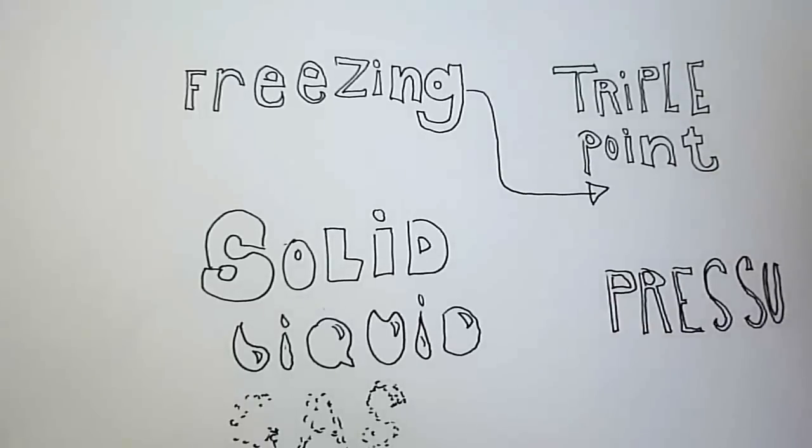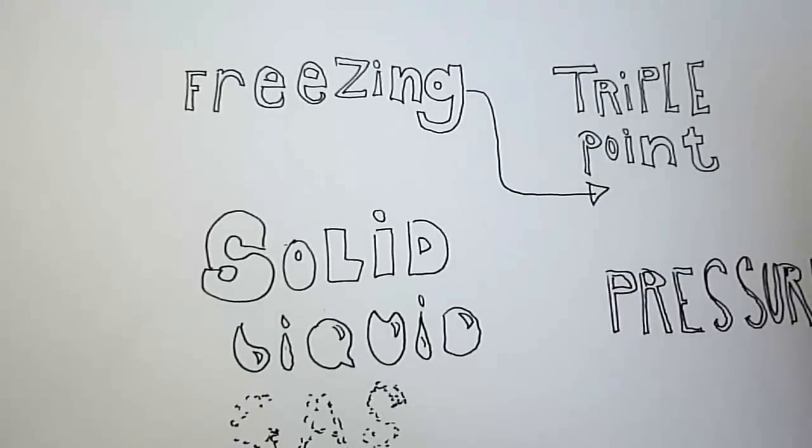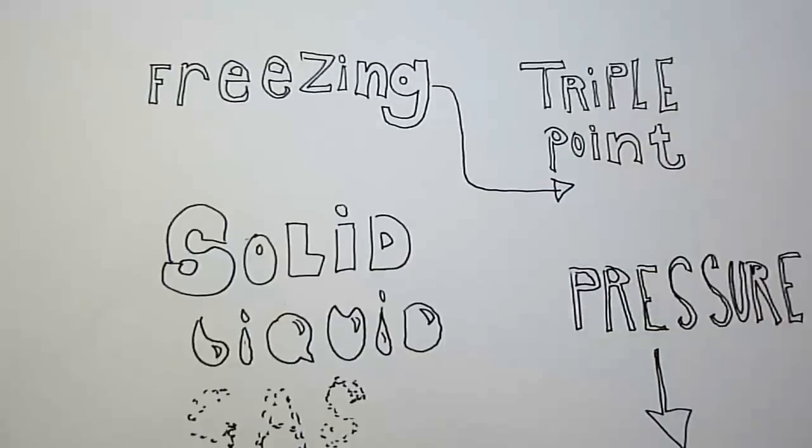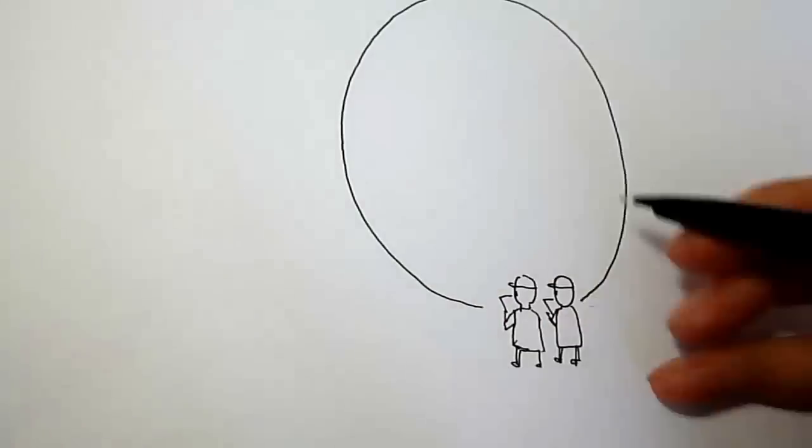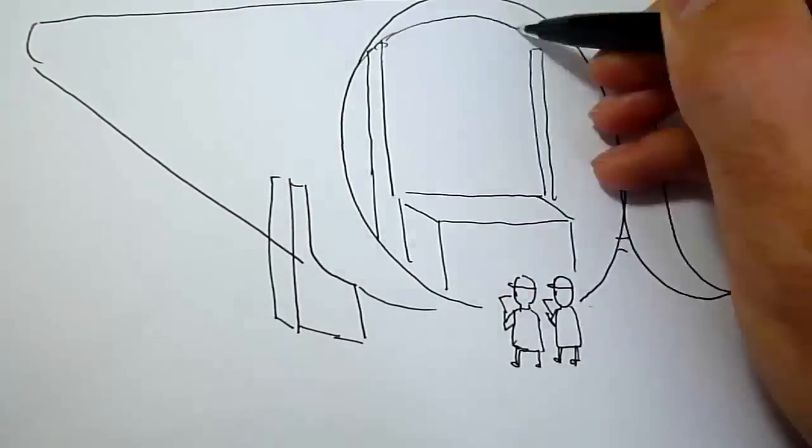The pressure around the material is then lowered so that the ice sublimates directly from the solid phase into gas phase without becoming liquid. As the ice leaves the material, the structure is left behind intact.